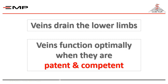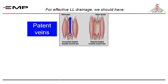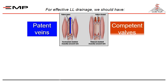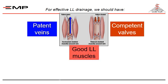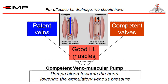One of the main functions of the lower limb veins is to drain the lower limb. The drainage functions optimally when the veins are patent and competent. For effective venous drainage of the lower limb we should have patent veins, competent valves, and good calf muscles. This is what we call a competent venomuscular pump, which will pump the lower limb venous blood against gravity, lowering the ambulatory venous pressure.